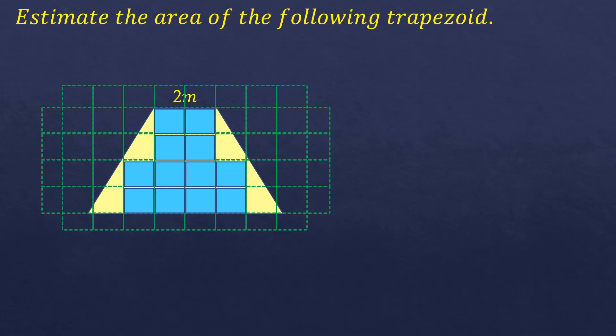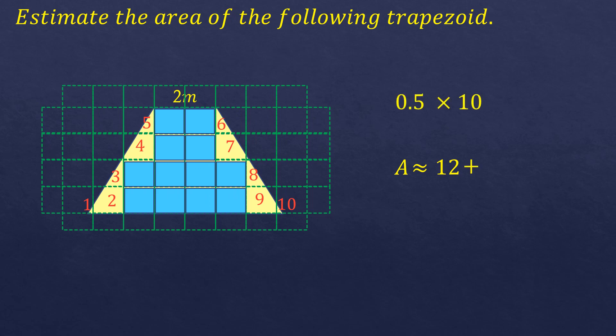Now counting the partially shaded squares, counted as one half each: 1, 2, 3, 4, 5, 6, 7, 8, 9, 10. There are 10 in all. The estimated area of this trapezoid is A equals 12 plus 0.5 times 10, which equals 5. So 12 plus 5 equals 17. The estimated area of this trapezoid is 17 square meters.